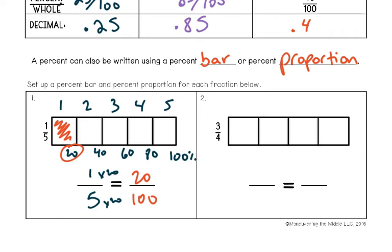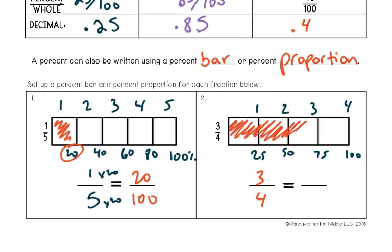Now bar number two is divided into fourths — one, two, three, four. Think of this as 100% total, then working backwards: 25, 50, 75. Memorize your fourths because they're like quarters — very easy to remember. If you were looking at three fourths, pause and figure out how much that would be in hundredths. You should have gotten: three out of four shaded goes up to 75% out of 100. You're multiplying by 25 at the bottom to get to 100, so you do the same at the top. You can think of it as a proportion.